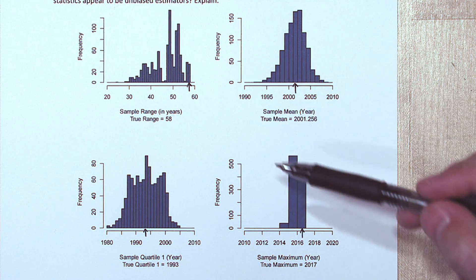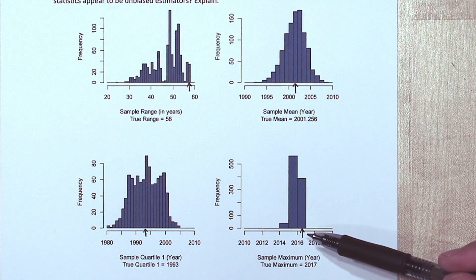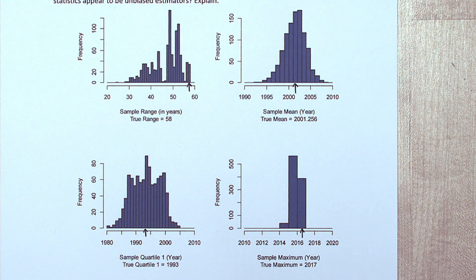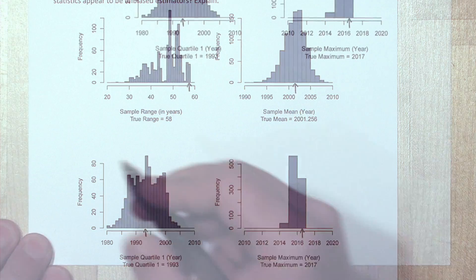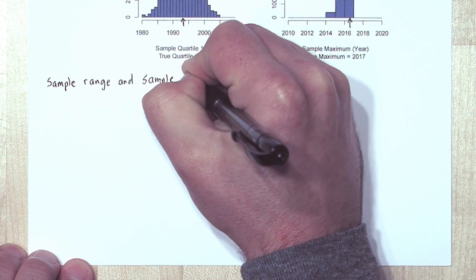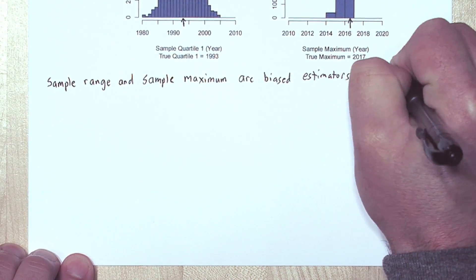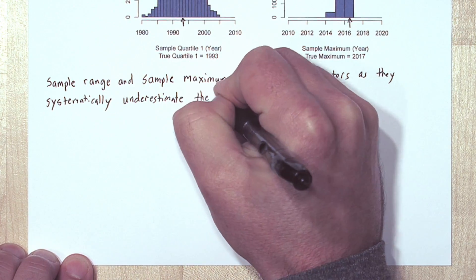Notice for sample range and for sample maximum, most of the time they underestimated the value of the parameter. So these are definitely biased estimators. Sample range and sample maximum are biased estimators as they systematically underestimate the parameter.